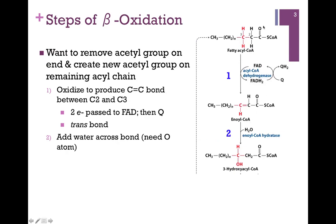Our goal is to clip off the acetyl-CoA group on the end, create a new acetyl group, and attach that to coenzyme A. So our first step is to create a new carbonyl at position number three on our chain. The carbon number three highlighted here in red is the beta position from the carbonyl carbon attached to coenzyme A, and that's why it's referred to as beta-oxidation. We want to create a carbonyl carbon at position number three, but we don't even have an oxygen atom, so our first goal is to unsaturate the bond.